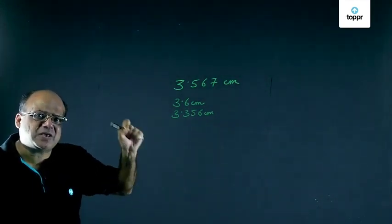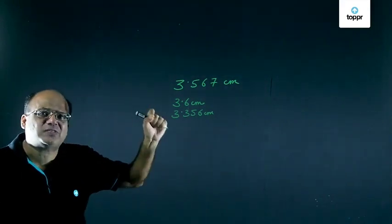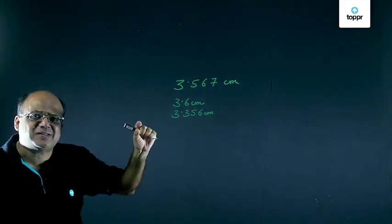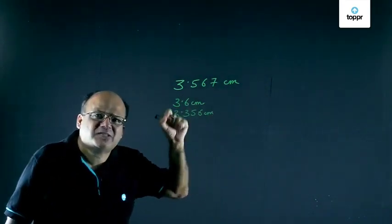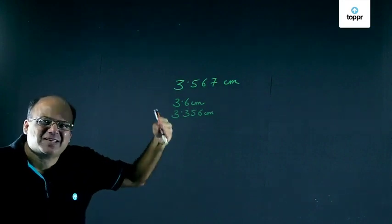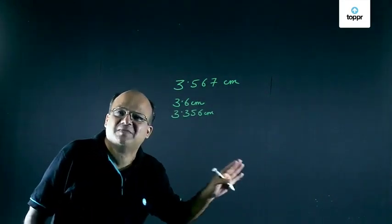So this is the meaning of precision and this is the difference between accuracy and precision. Accuracy tells us how close the value is to the exact value, and precision tells us how many decimal places, how many significant digits we have got in that measurement.